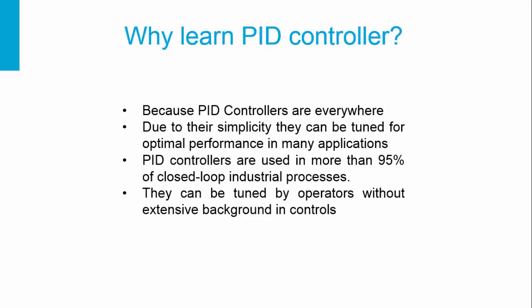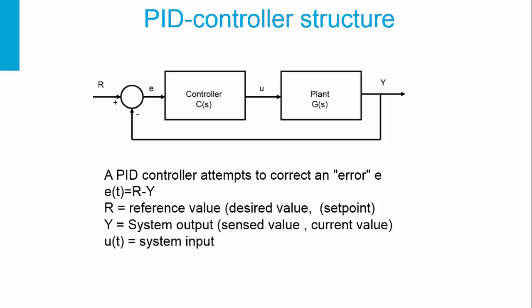Why do we learn a PID controller? Because PID controllers are everywhere. They are simple and can be tuned for optimal performance. They can be used in many applications — more than 95% of closed loop industrial processes — and can be tuned without extensive background in control. In a PID controller structure, we have a reference value, the controller, the plant, and the system output, with the output always fed back to measure the error.